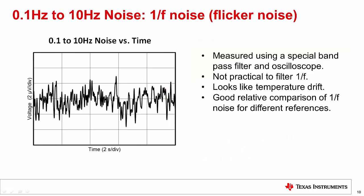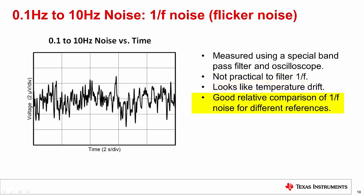0.1 Hz to 10 Hz noise is an industry standard way of specifying 1/f, or flicker noise. It is measured using an active bandpass filter that attenuates signals below 0.1 Hz and above 10 Hz. It is not practical to filter out 1/f noise, as it extends down to 0 frequency. Because this noise is very low in frequency, it can be difficult to distinguish from ambient temperature drift. The only practical way to minimize 1/f noise in references is to simply choose a reference model with good specifications, and because this error source cannot be calibrated out, it is often a key consideration when selecting devices.